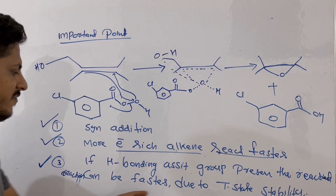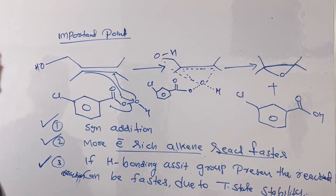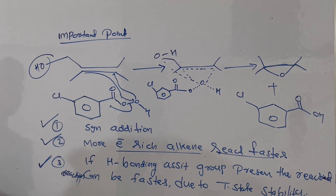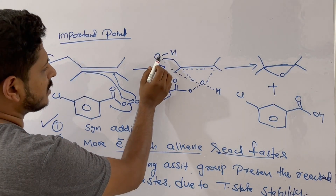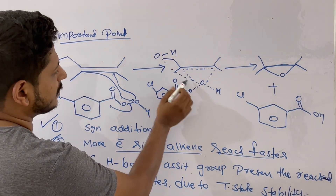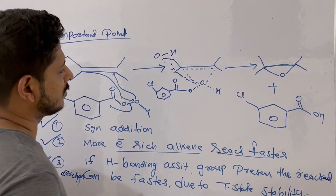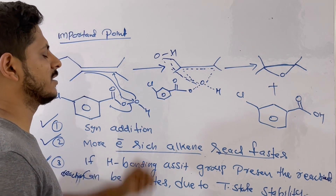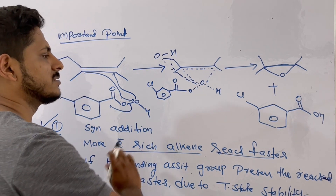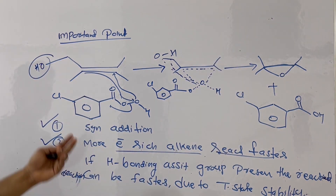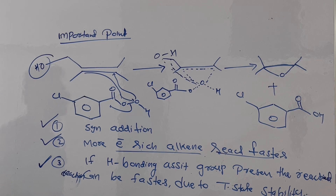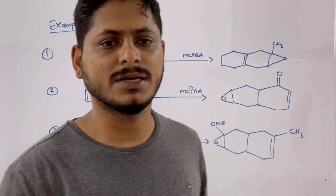Transition state stability: if you have an OH group, which has hydrogen-bonding tendency, present in your substrate, during the transition state this OH group can make a hydrogen bond with the mCPBA oxygen, hence stabilizing the transition state. As a result, the reaction rate will be faster. These are the three points to remember when dealing with epoxidation.